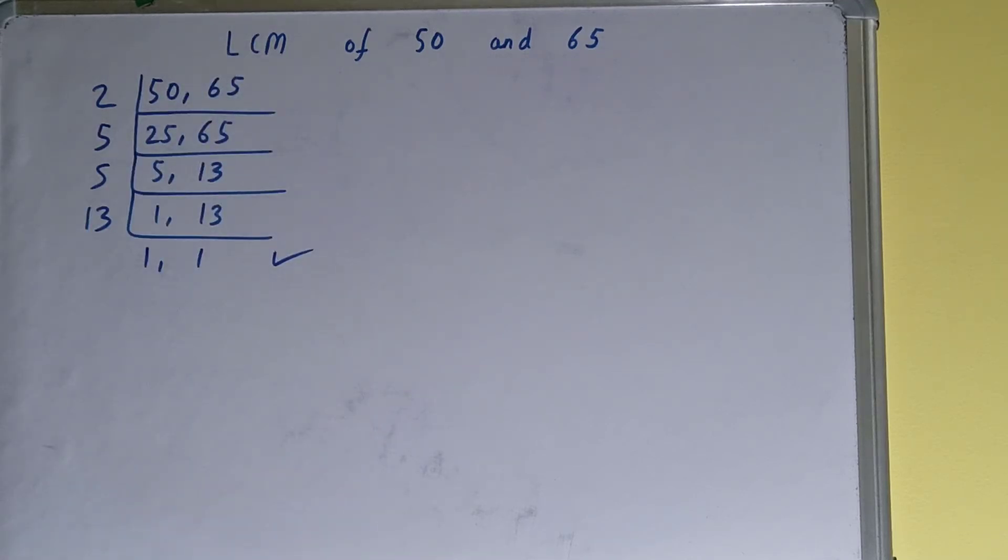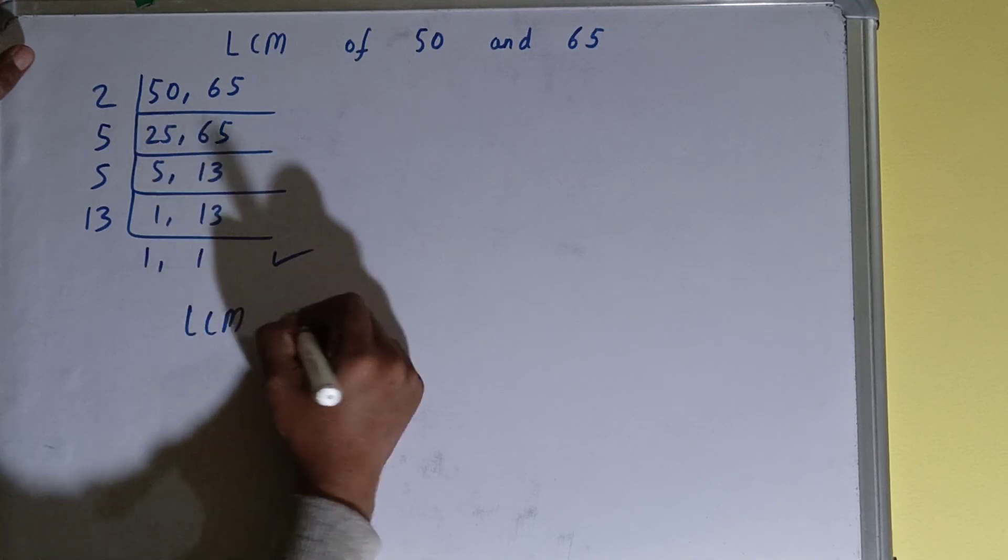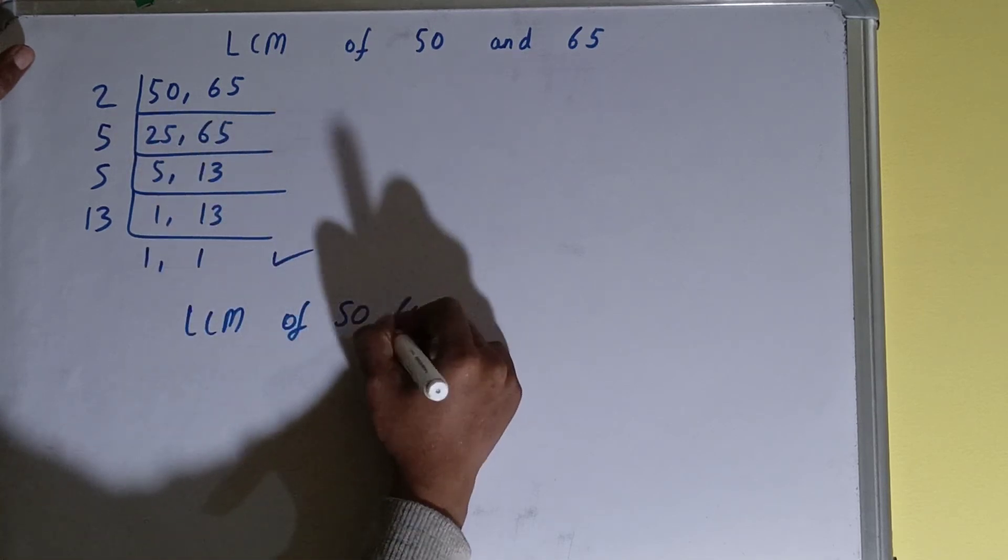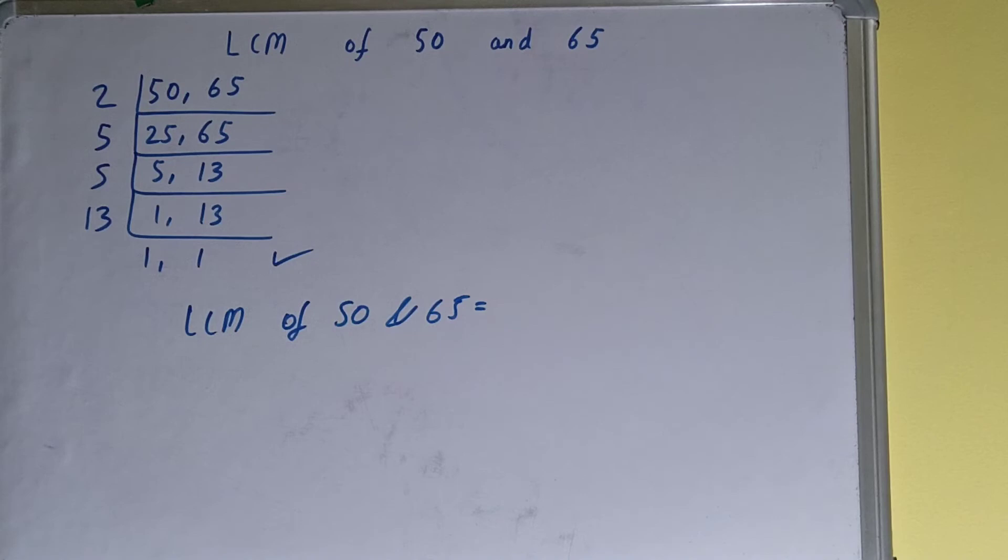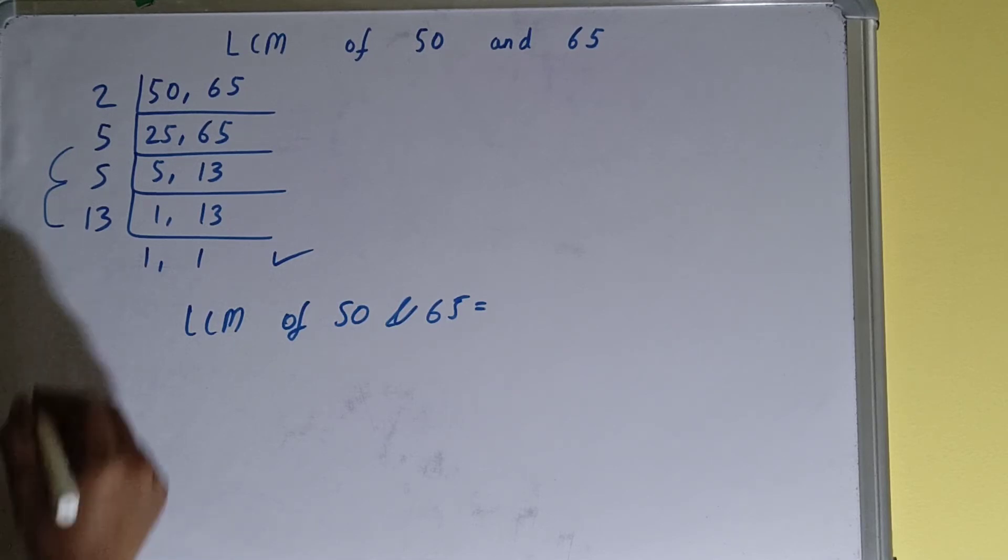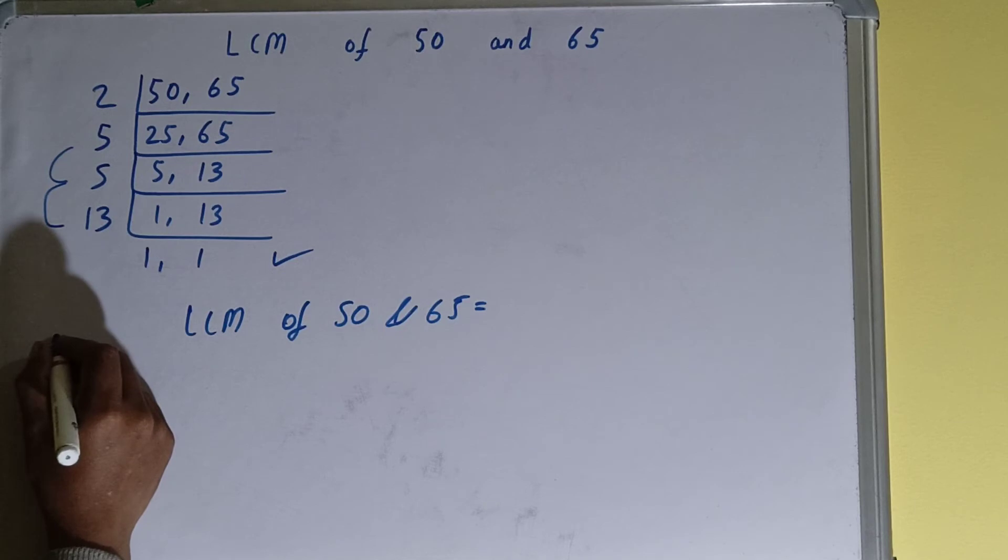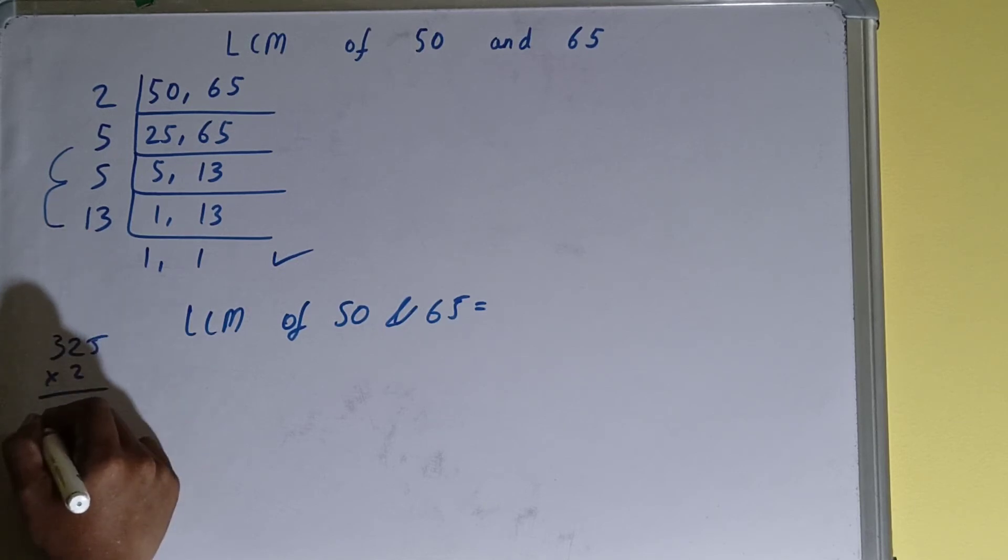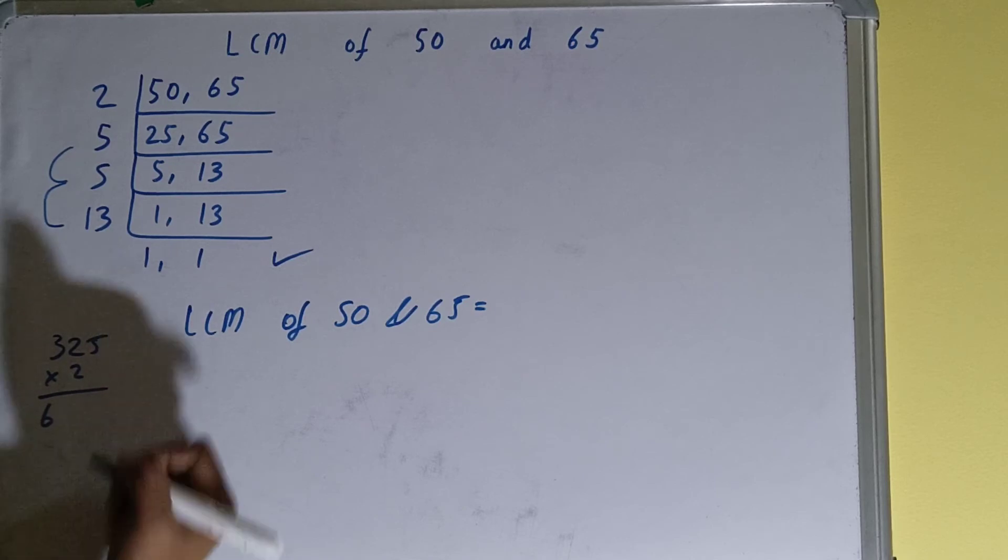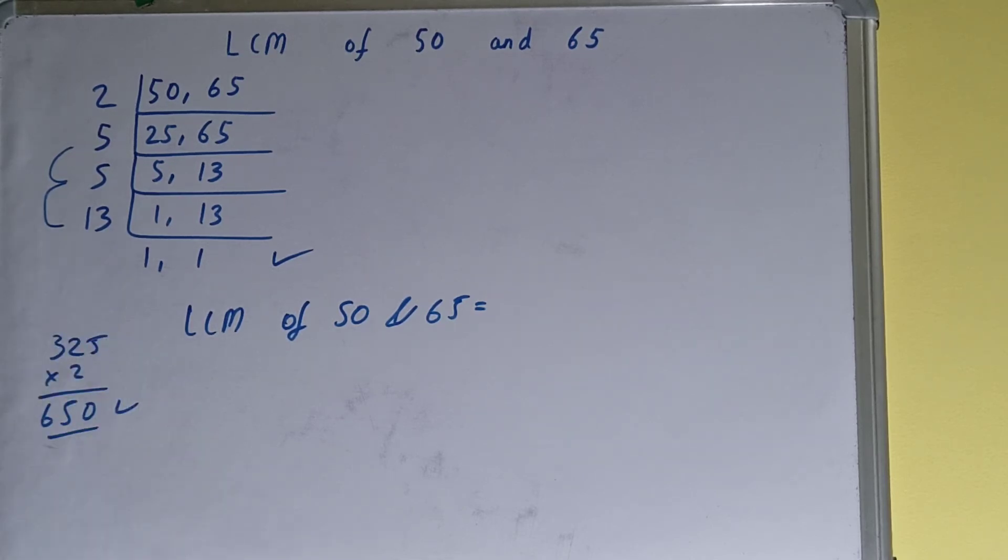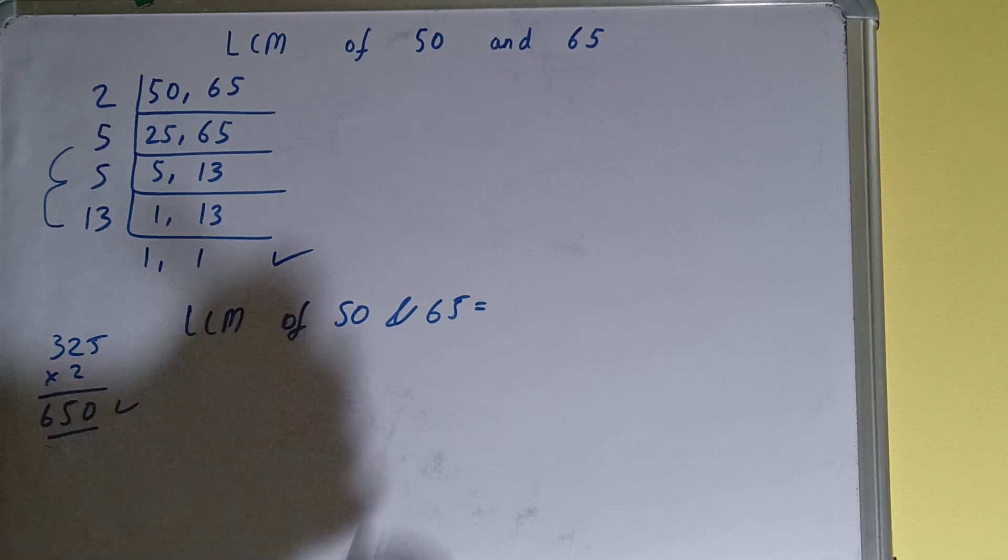Once we get that, we need to stop, and we need to do a last thing. That is, LCM of 50 and 65 equals multiply whatever you have on the left-hand side. That is 2 times 5 times 5 times 13. 325 times 2 equals 650. So your answer, or your LCM, will be 650.